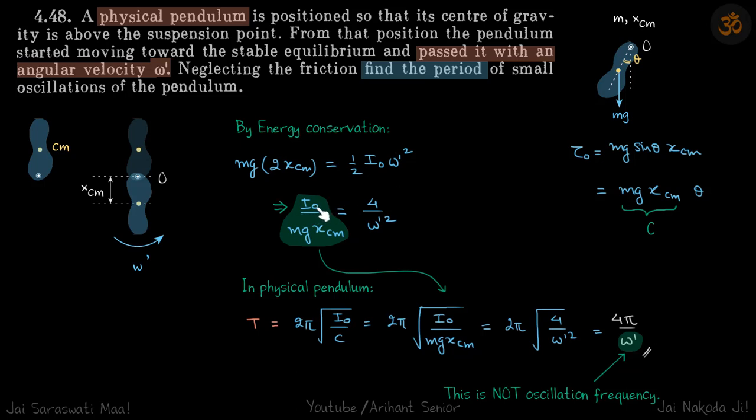We're keeping this together because the time period is 2π root Io by c. We've seen that c is mg xcm theta and Io is related through the energy equation. So this ratio we found from there. In this physical pendulum, the time period comes to be 2π root 4 by omega dash squared, which equals 4π by omega dash.